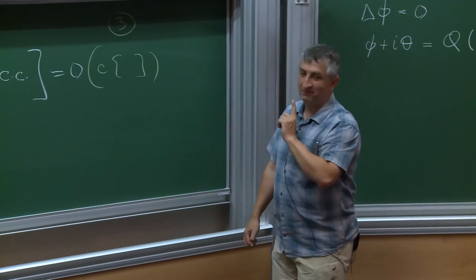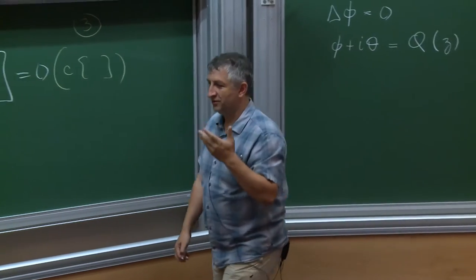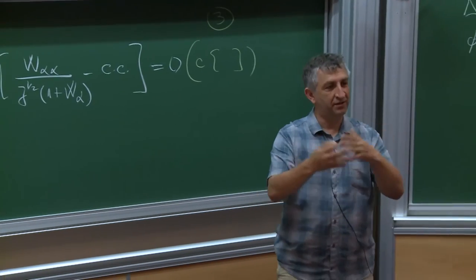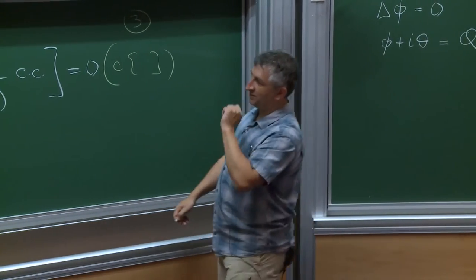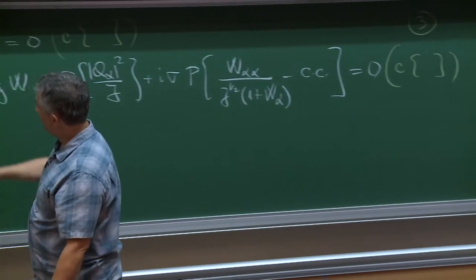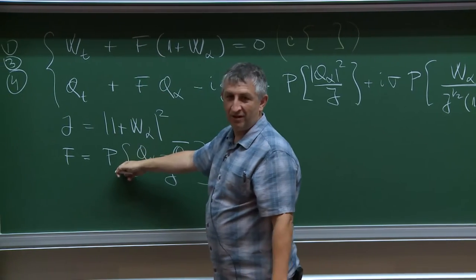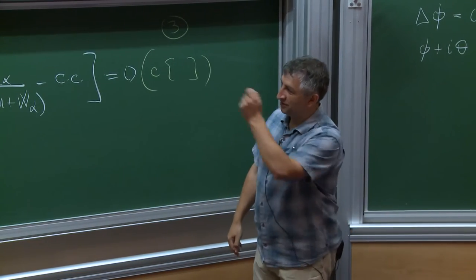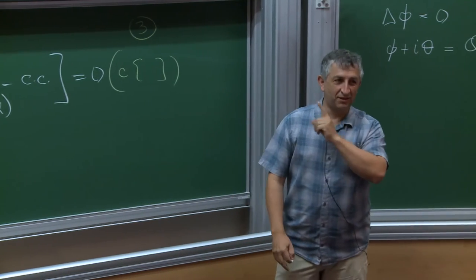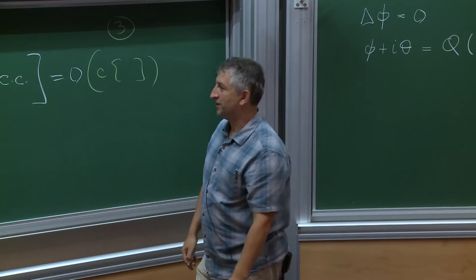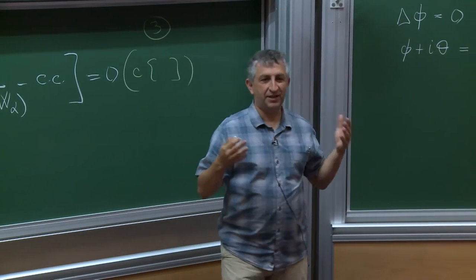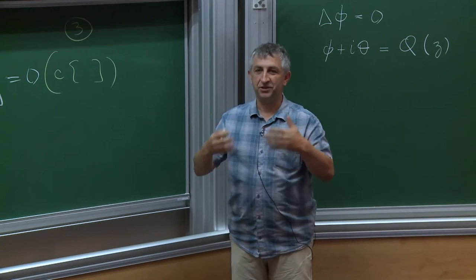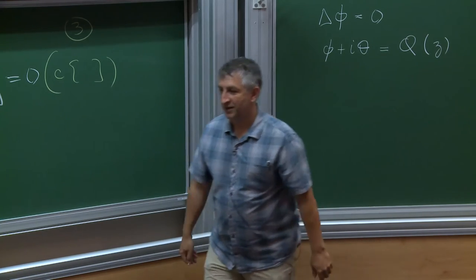When you have a fully nonlinear equation, you understand its character by linearizing it and looking at the linearized equation. To write the linearized system, let w and q denote the linearized variables and write dt of w and q. In the first approximation, the expressions on the right contain w_alpha, q_alpha, maybe w and q, and some complex conjugates w_alpha_bar and q_alpha_bar. Complex conjugates are anti-holomorphic and get killed by projections, so the leading part with derivatives dominates.